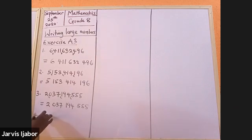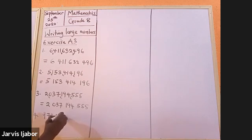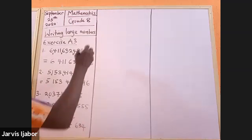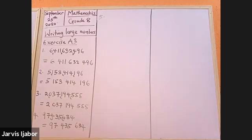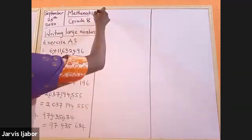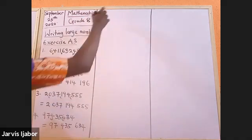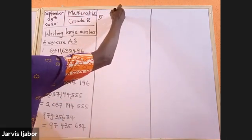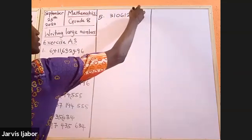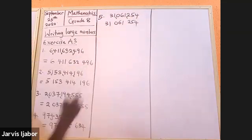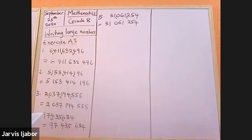Number four is: nine, seven, four, three, five, six, three, four. Number five. So when we write in this way, it makes it easy for us to read. That's the essence of writing this — just to make it easy for you to read.